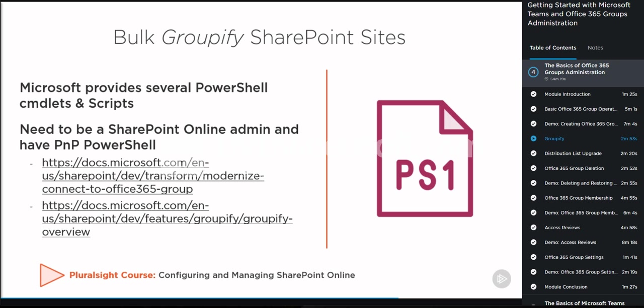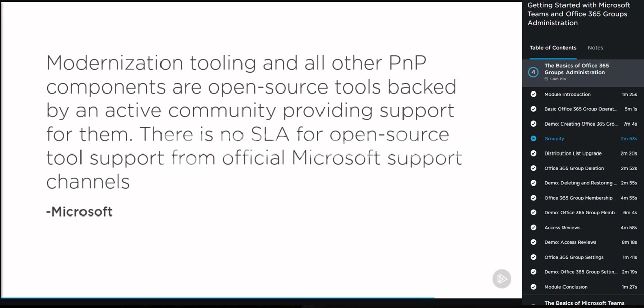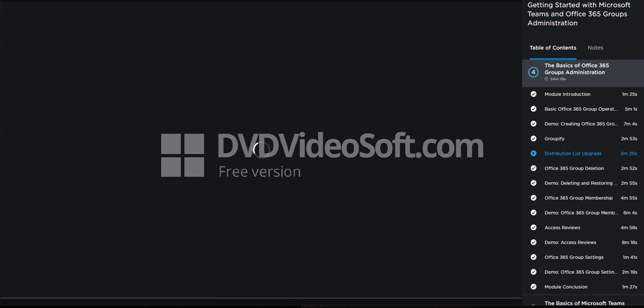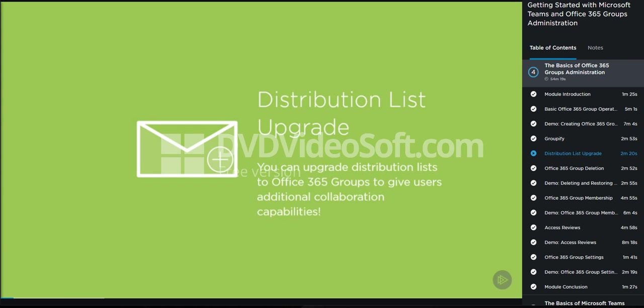Another type of artifact that we can upgrade to an Office 365 Group are distribution lists. You can upgrade distribution lists to Office 365 Groups to give users additional collaboration capabilities. In order to do this, you need to be an Exchange Online Admin or a Global Admin, and you can do it in the Exchange Online Admin Center or in PowerShell. This is really an admin-level action. The upgrade process can take anywhere from a few minutes to a few hours, and not all distribution lists are eligible — you can only upgrade cloud-managed, simple, non-nested distribution lists.